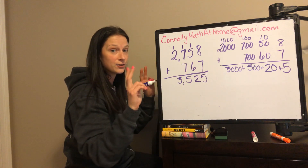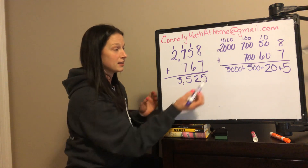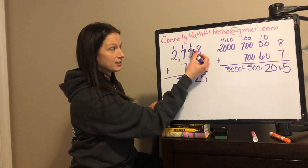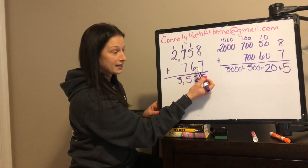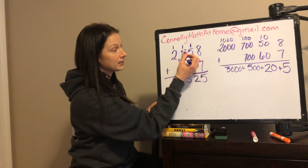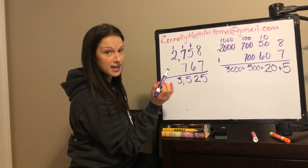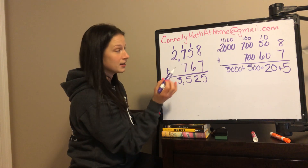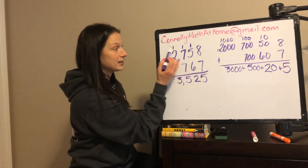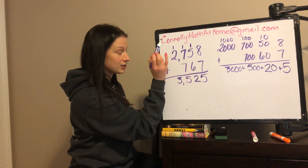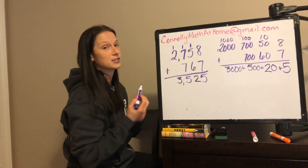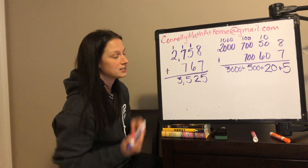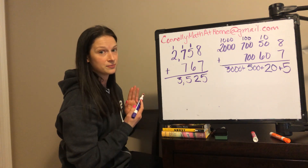And that is what is going on when you carry the one. We're not just carrying the one — it actually means something. When we bring it to the tens place, it's because we have an extra group of 10. When we bring it to the hundreds place, we have 10 extra groups of 10, which is 100. When we bring it to the thousands place, we have 10 extra groups of 100, which is 1,000. That's why we're carrying ones to the next place value.